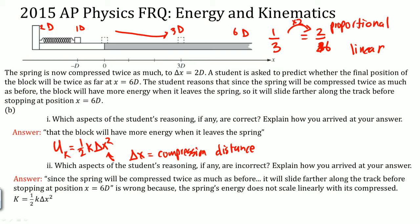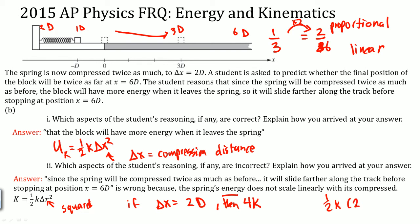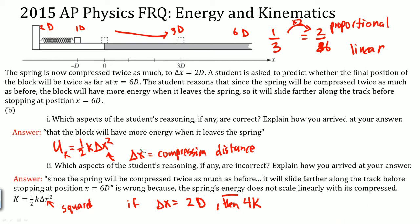If ΔX is now 2d, the energy becomes one-half K(2ΔX)² = 4 × (one-half K ΔX²). So compressing the spring twice as much gives 4 times as much potential energy, which converts to 4 times as much kinetic energy. The spring's energy scales quadratically, not linearly.